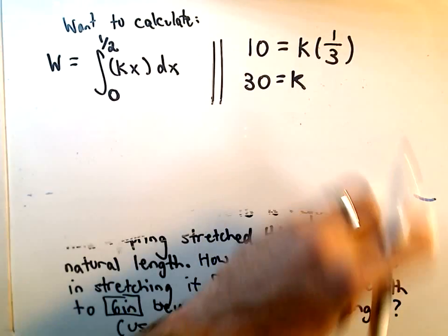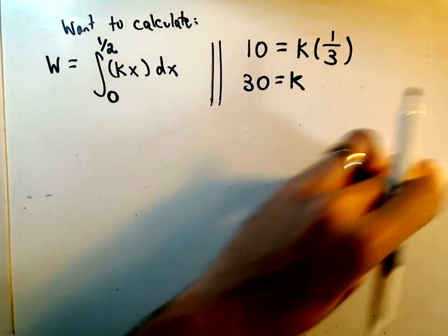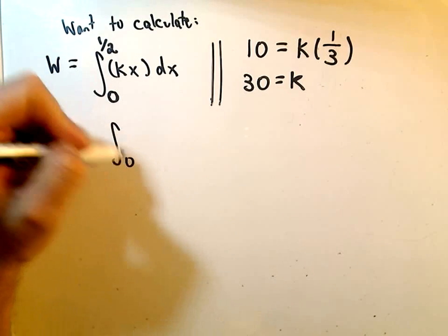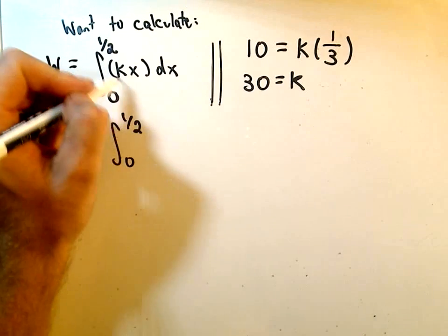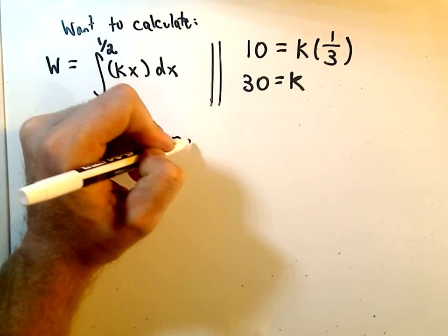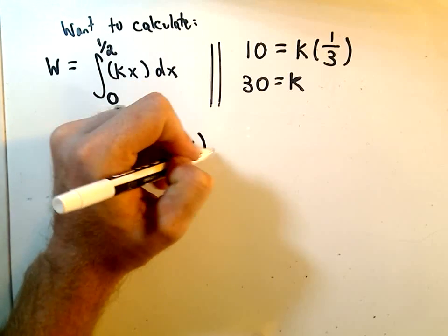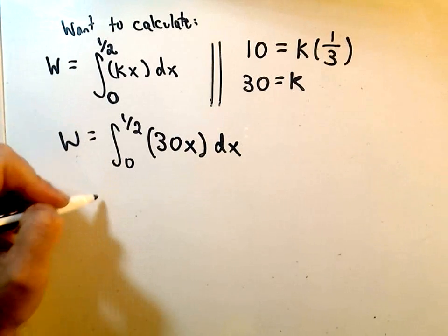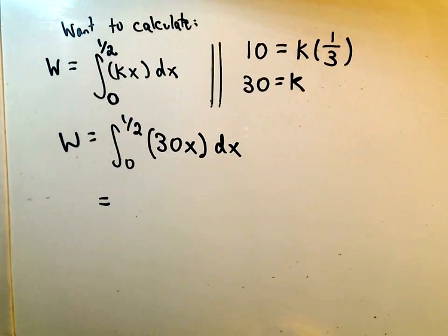So now we're pretty much there. All we're going to have to do then is we're going to have to integrate from 0 to 1 half. We know that k is 30, and then we just multiply that by x dx. And, now it's an easy problem, as far as integration problems go.